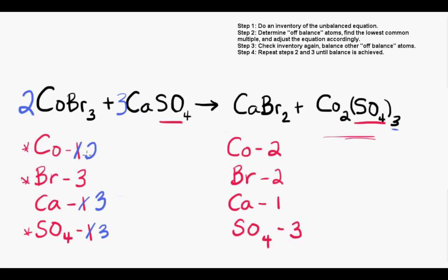And adjusting our inventory now, you'll see that we've balanced cobalt, 2 and 2. We've altered bromide as well, and unfortunately bromide is still off balance, but cobalt is balanced.